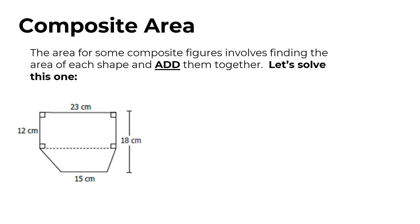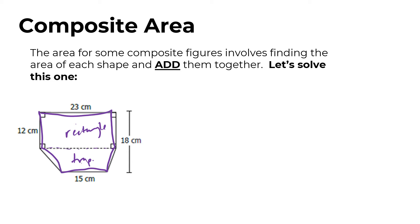Here's an example of a composite figure where we add pieces together. This whole shape is a hexagon — it has six sides — but we don't have a formula for a hexagon all in one shot. We need to separate it into shapes we know. You may or may not be given the dividing lines, so you might have to do that yourself. In this case, we can separate it into a rectangle on top and a trapezoid on the bottom. We'll find each area separately and then add them together.